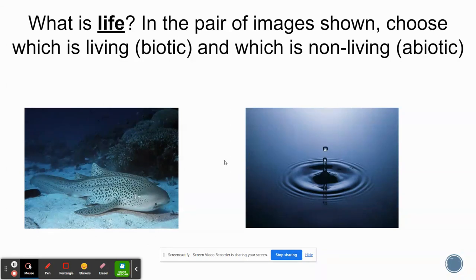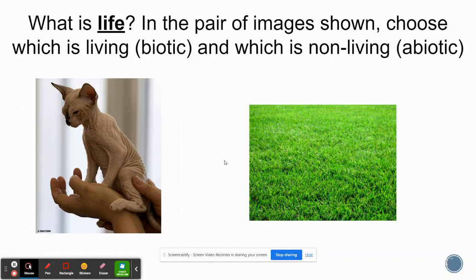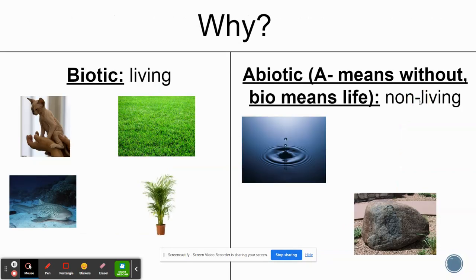Try classifying those items and place them in your table. Now we're going to compare your answers to the answers on the slide. All of these ones here are considered living or biotic, and all of these ones here are considered abiotic — non-living. You had this idea of what living is, what makes something living, and you had the idea that these things don't have those characteristics. So today we're going to look at what those characteristics are.